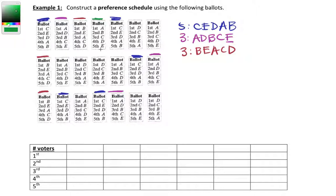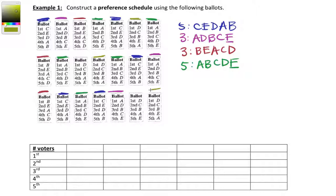The next ranking is A, B, C, D, E — alphabetical order. Counting through, we find five voters ranked them that way. Then the ranking D, C, B, E, A: we find three voters with that ranking. Note that D, C, B, A, E is a different ordering — similar but not the same. We confirm three voters chose D, C, B, E, A.